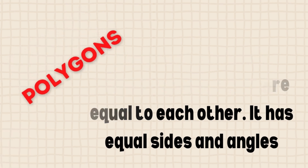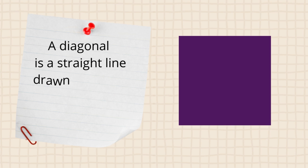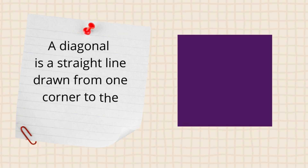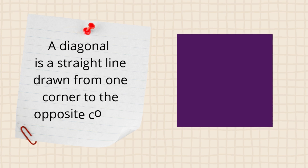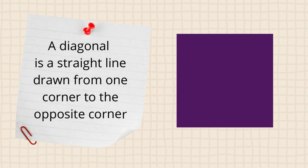Before we start our lesson, let's see what a diagonal is. A diagonal is a straight line drawn from one corner to the opposite corner. Look at this square — it has two diagonals.